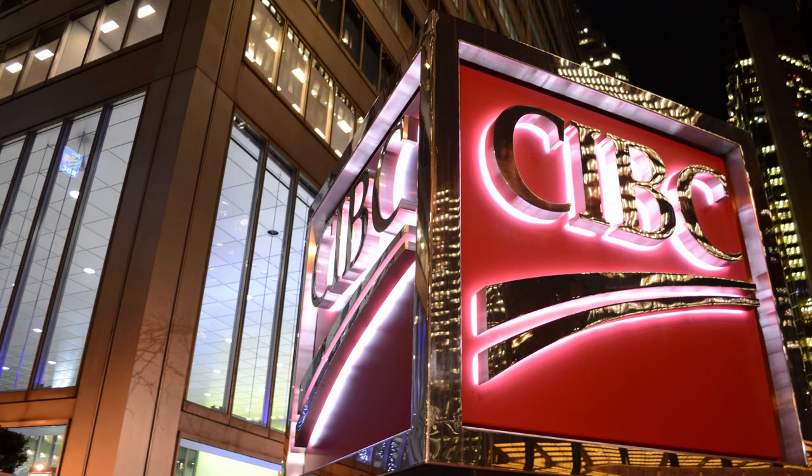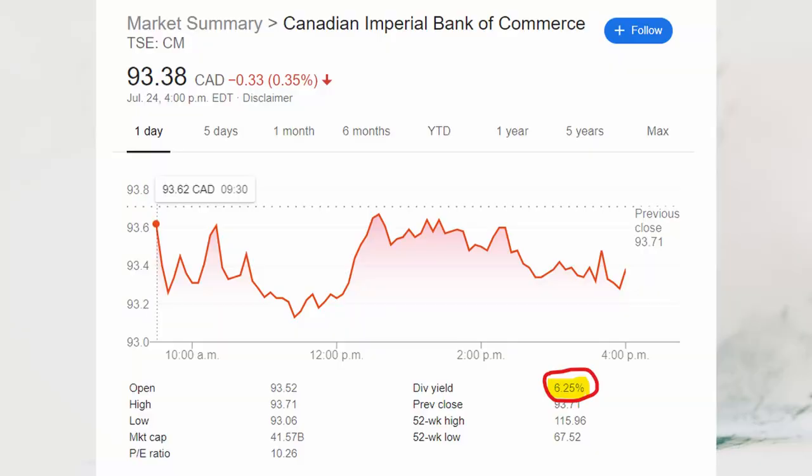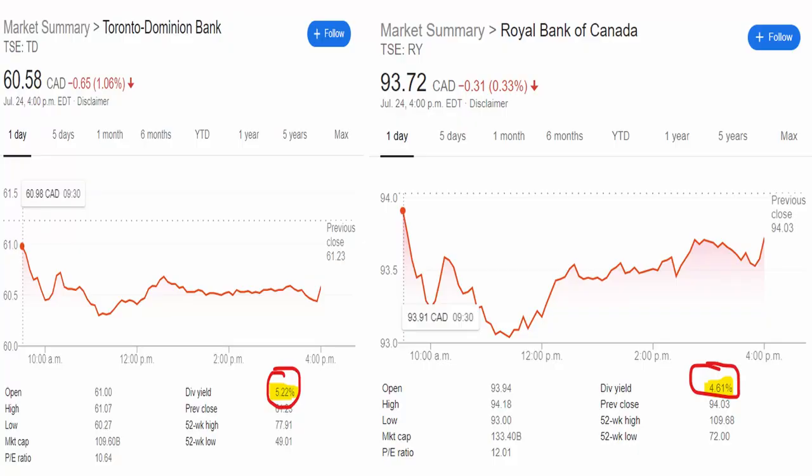CIBC looks to be the most vulnerable of the big six Canadian banks because they have the largest exposure to the Canadian housing market. Shares of CIBC trade at a higher discount than compared to its peers and its dividend yield is just north of 6%. And all that because of a very good reason, because they have the most at risk if there is a meltdown in Canadian housing prices. Worst comes to worst, and a wave of mortgage defaults does happen, CIBC is the most vulnerable compared to its peers. CIBC stock could fall much further.